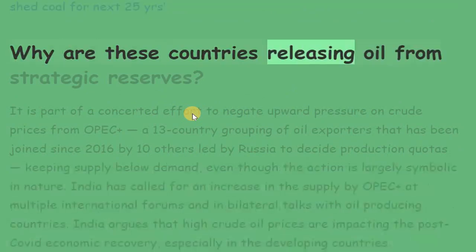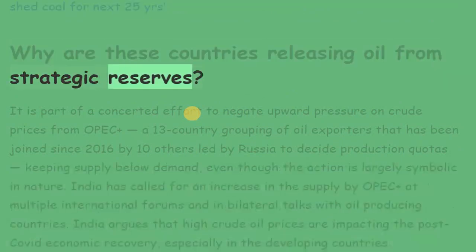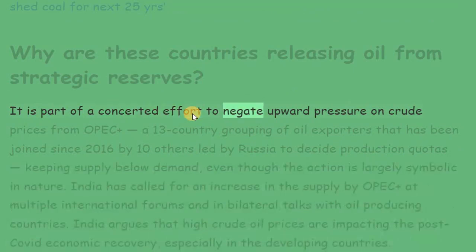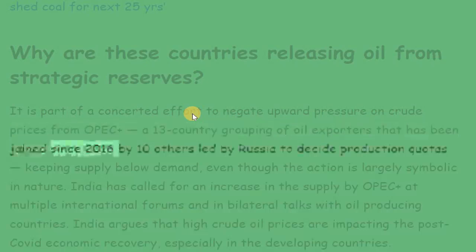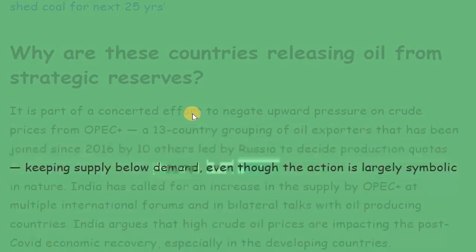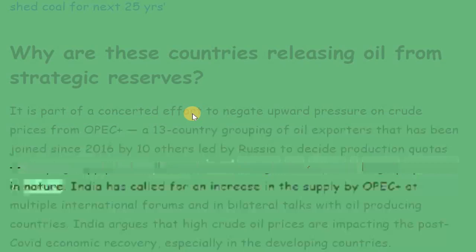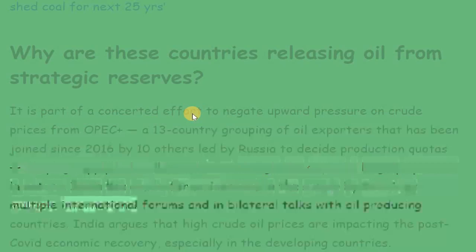Why are these countries releasing oil from strategic reserves? It is part of a concerted effort to negate upward pressure on crude prices from OPEC Plus — a 13-country grouping of oil exporters that has been joined since 2016 by 10 others led by Russia to decide production quotas, keeping supply below demand, even though the action is largely symbolic in nature. India has called for an increase in supply by OPEC Plus at multiple international forums and in bilateral talks with oil-producing countries.